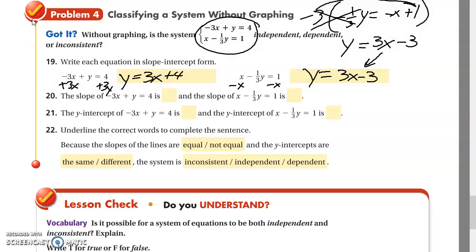The slope of negative 3x plus y equals 4 is 3. And the slope of x minus 1 third y equals 1 is also 3. So the slopes are the same. Same slope. What does that mean? We talked about that earlier. If they have the same slope, they're going to be parallel. So the y-intercept of negative 3x plus y equals 4 is 4. And the y-intercept of this is negative 3. So they're different y-intercepts. They're not the same line. So you know they're parallel.